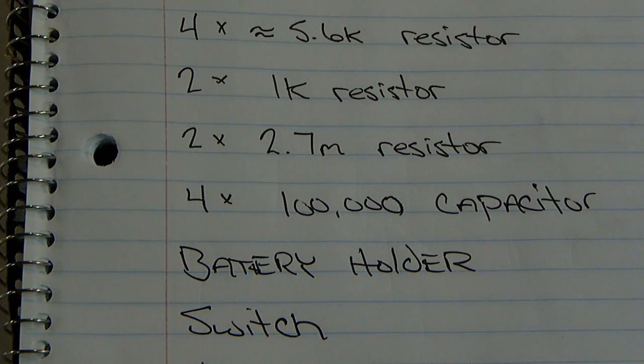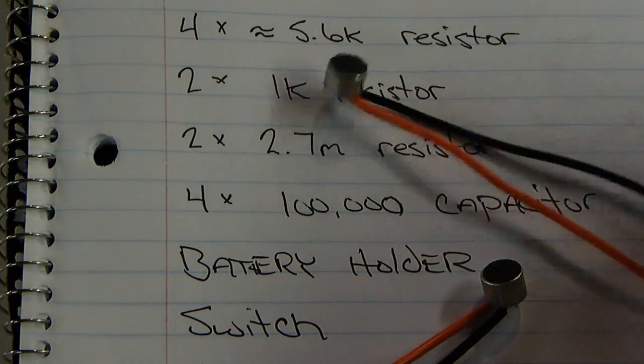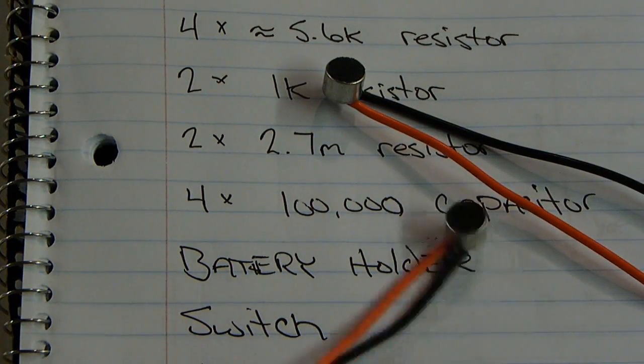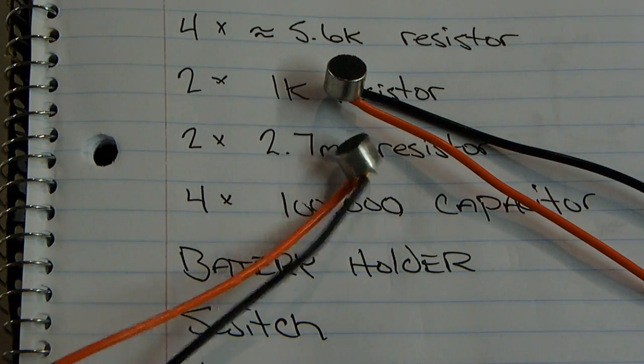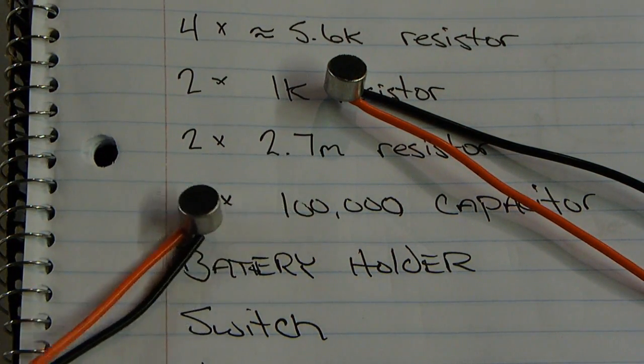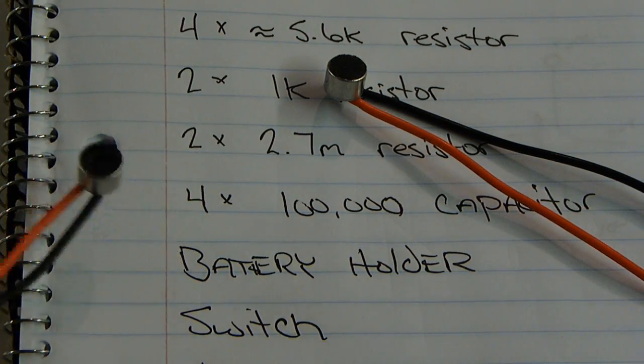I have two electret microphones. You can probably pick these up at Radio Shack. If not, you can definitely get them on eBay or salvage them out of old cassette radios that used to record your voice.